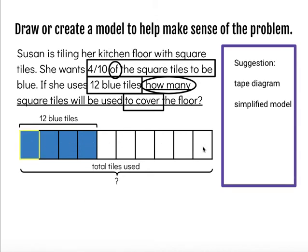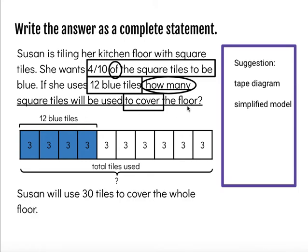So whether I looked at it this way and considered how many four tenths sections I have, I have two and a half of those, or if I look at it this way and consider that each of those smaller sectors must be three tiles, I can use that to solve my problem and answer my question. So how many square tiles will be used to cover the floor? Susan will use thirty tiles to cover the whole floor.